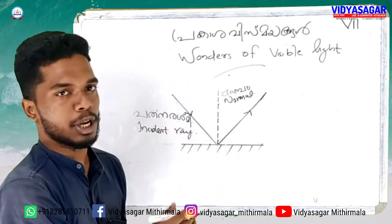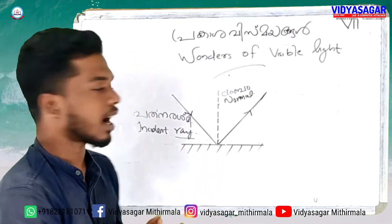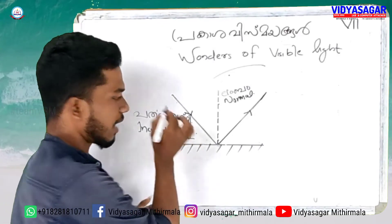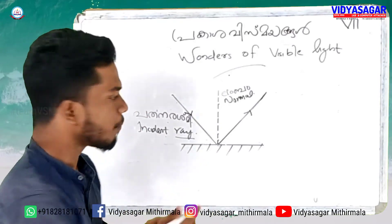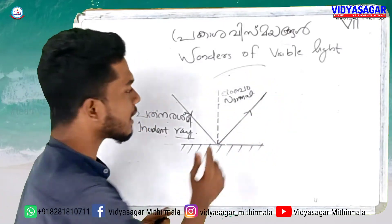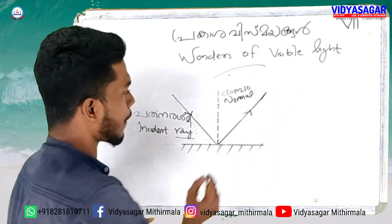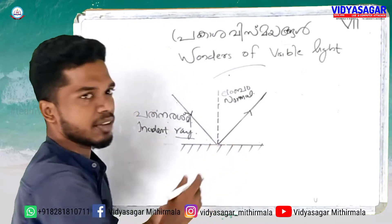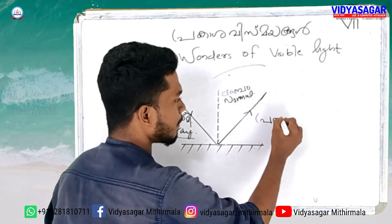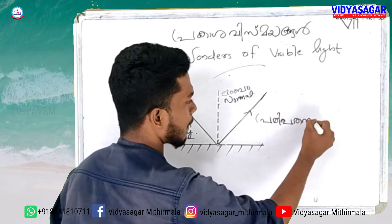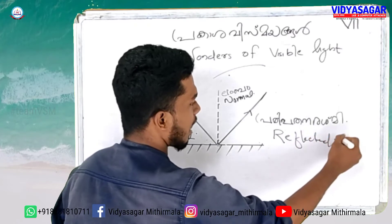What is the name? Incident Ray. There is a reflected ray present. In this case, the name is PRADIPADANARES. It is called PRADIPADANARES. What is the name PRADIPADANARES? It is called reflected ray.